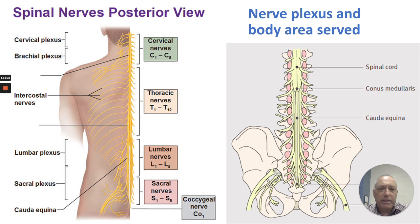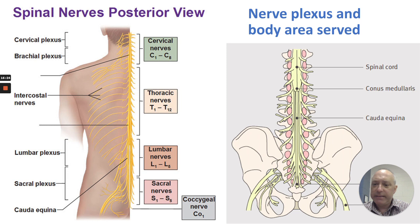Looking at the nerve plexus and body areas served from a posterior view: cervical nerves C1 through C8 form the cervical and brachial plexus. Thoracic nerves T1 through T12 follow. Then lumbar nerves L1 through L5, sacral nerves S1 through S5, and the coccygeal nerve. From this view, we can also identify the cauda equina and the conus medullaris.